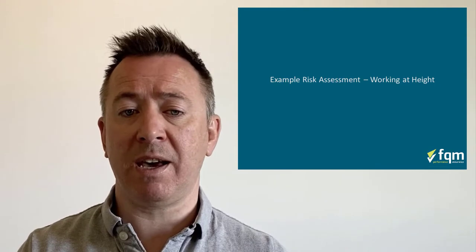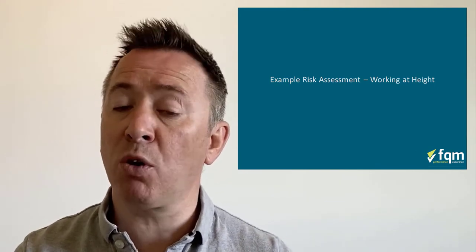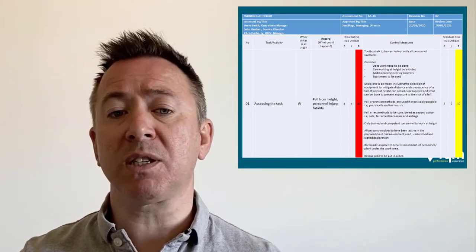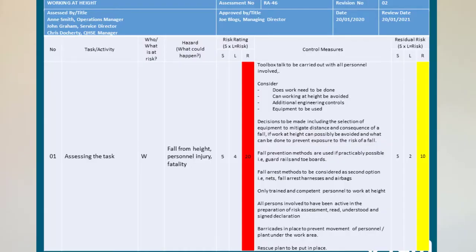The first example is working at height, and we've taken some small areas associated to that. In this risk assessment, we've looked at working at height, documented the risk assessment, recognised that it's an additional revision we're working on, who the assessment was taken by — the people undertaking the task — and who it was approved by. We've got a date and a future review in place in case there are no subsequent changes.